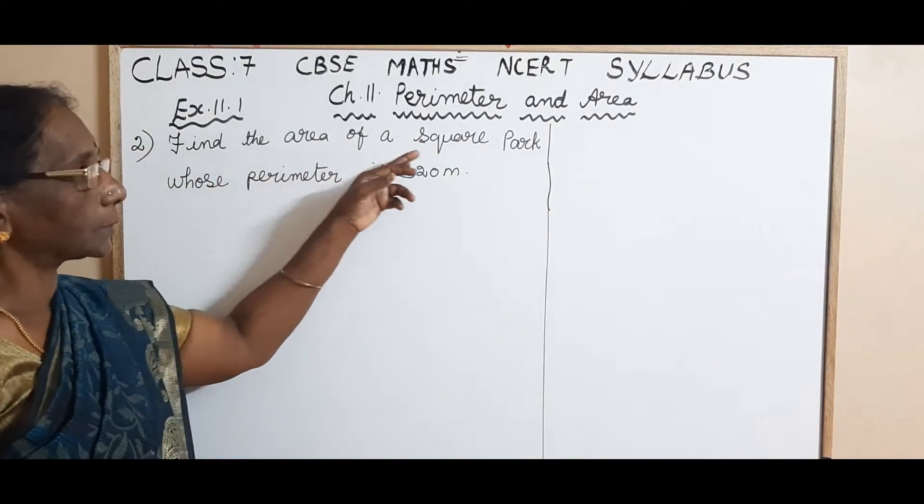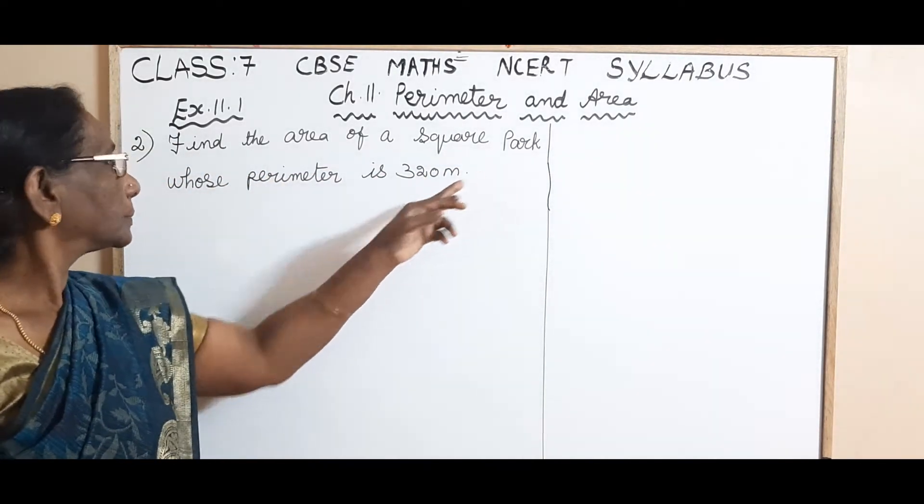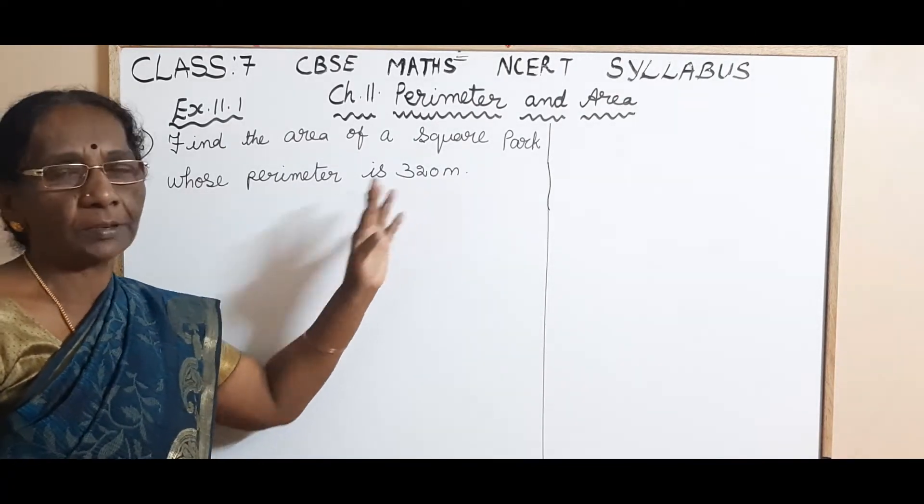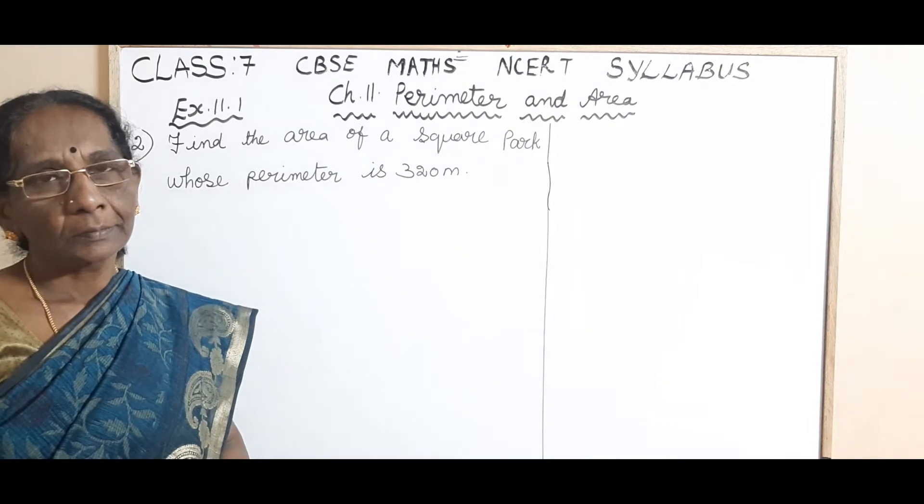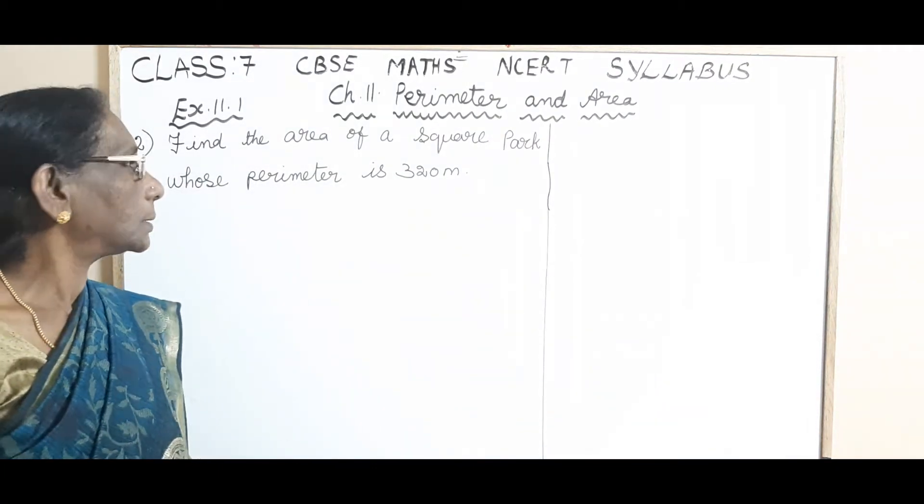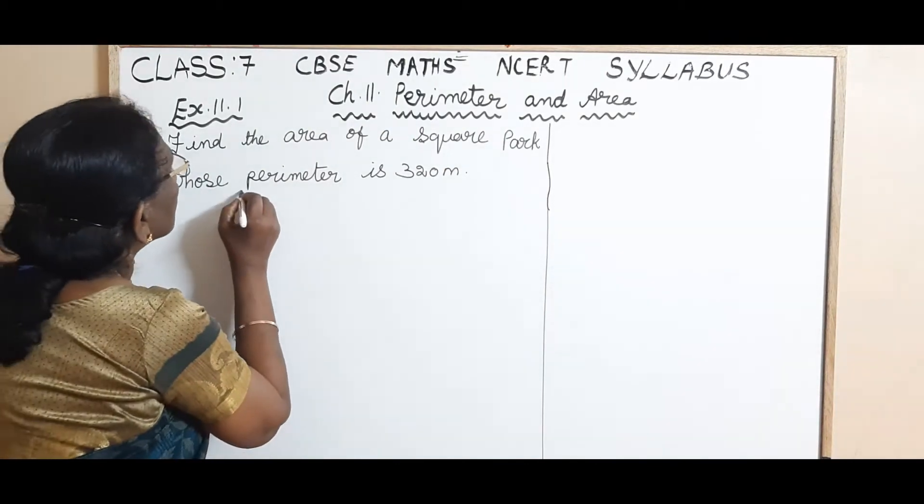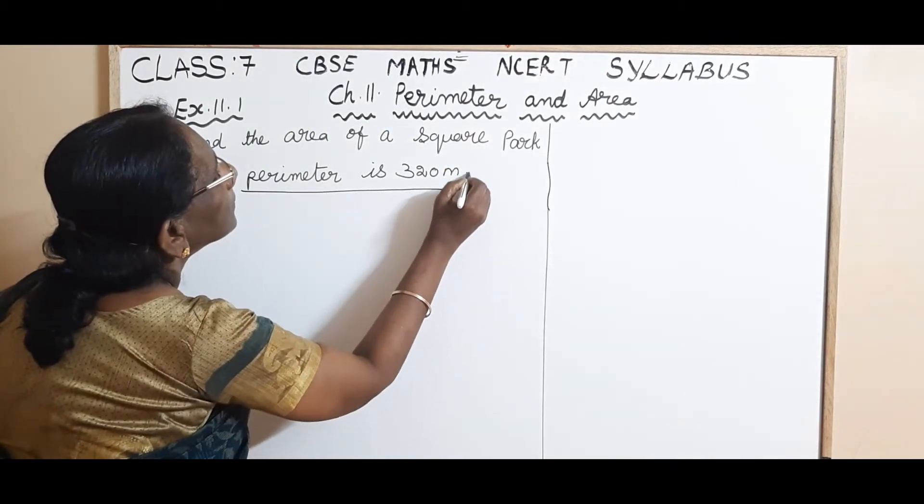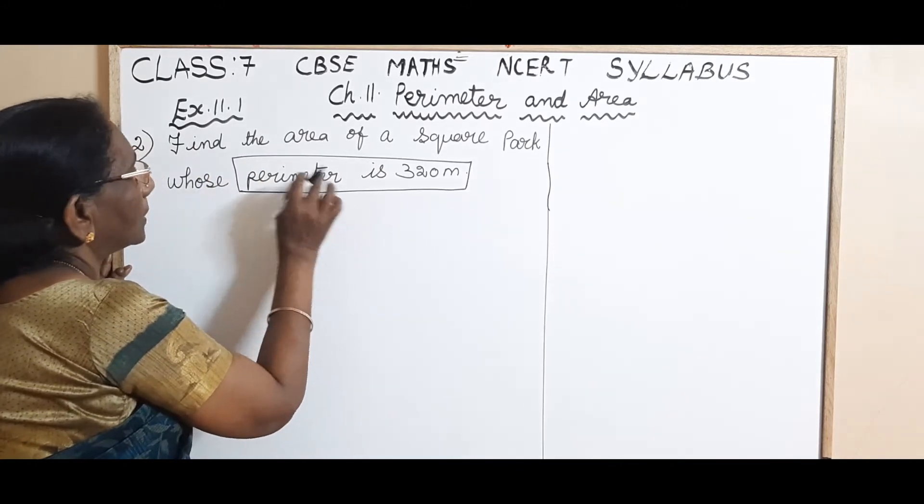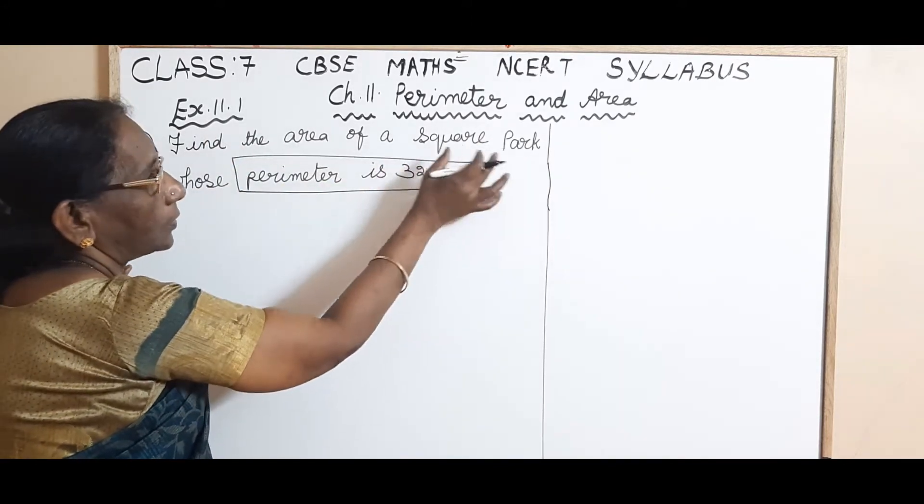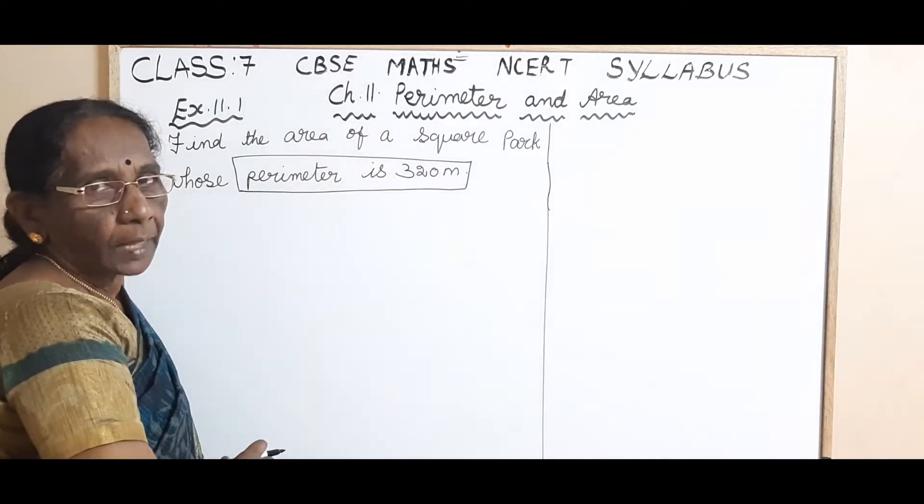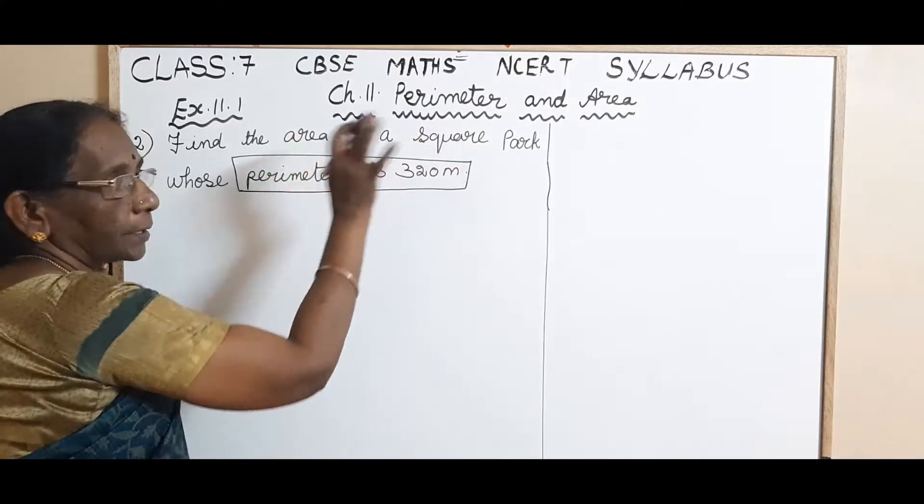Find the area of a square park whose perimeter is 320 meter. So what is given in the question? The given information is perimeter. The shape of the park is square, and that is the first information given.